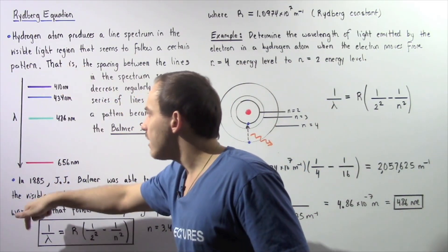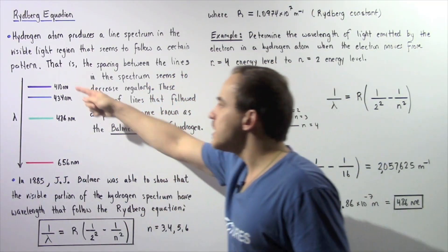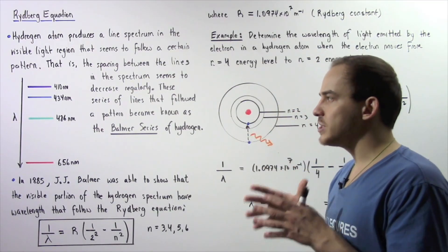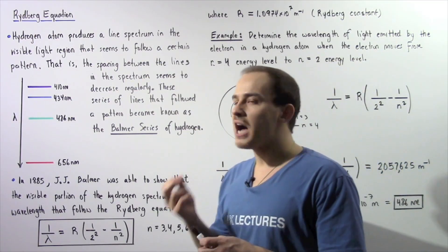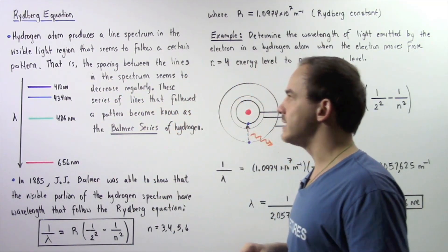So notice as we go down the wavelength of our light increases. And this diagram basically tells us that hydrogen atom emits four types of light that each correspond to the following wavelength quantity.